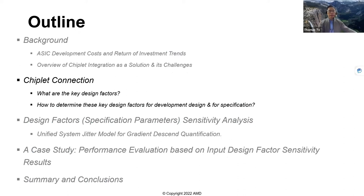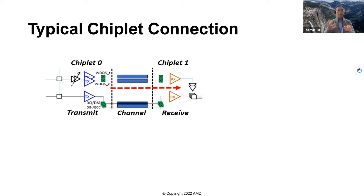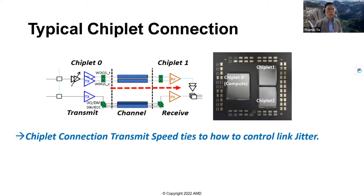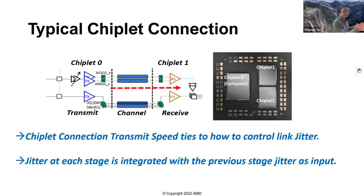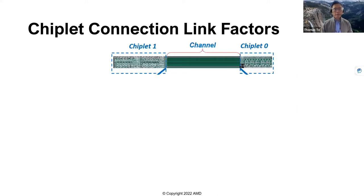Our focus and objective is to identify the underlying design factors so that we can optimize the system jitter as a whole. This is a typical chiplet connection, starting from chiplet 0 on the left-hand side. We send signals through the channels — channels can mean interposer, InFO, or other different media — and then we send the signals to the receiving end, chiplet number one. We want to know how to manage and control the link jitter, which will accumulate starting from the transmit side based on many underlying factors such as power noise.